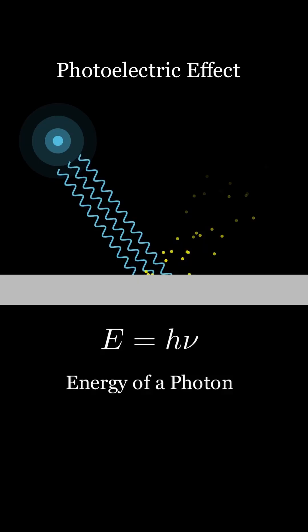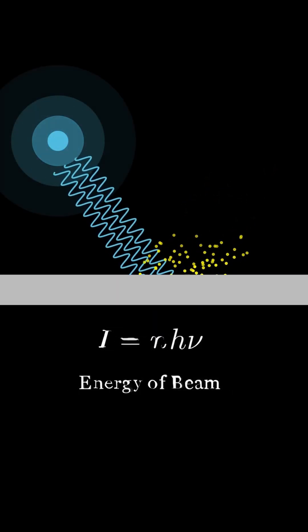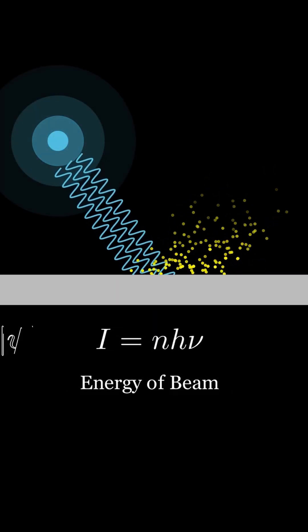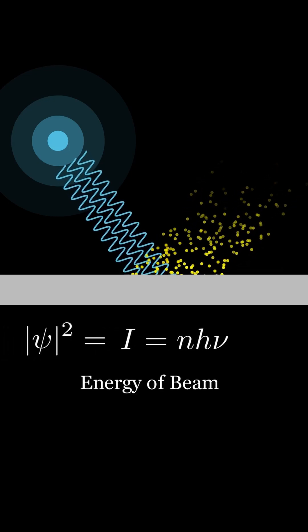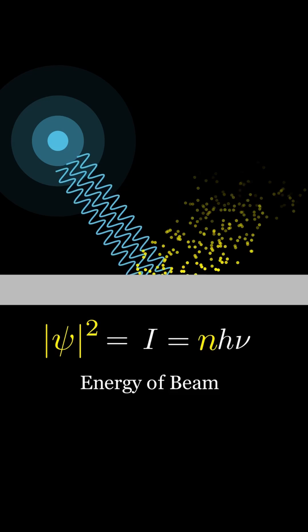But classically, we know that the energy of any wave has something to do with its amplitude. So what if we increase the energy or the intensity of the incident radiation? It simply increases the number of photons. And we know that the energy of the beam has something to do with the amplitude mod squared. And this was the crucial inspiration for Max Born.